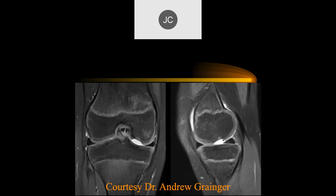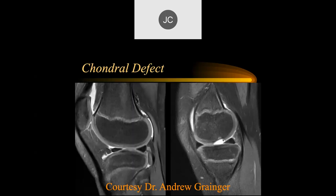We have a coronal and a sagittal of the knee — there's a full thickness cartilage defect of the lateral femoral condyle. What would you want to do next? Look for that fragment. There it is. If it's really acute, especially in young kids, the fragment may still be viable.